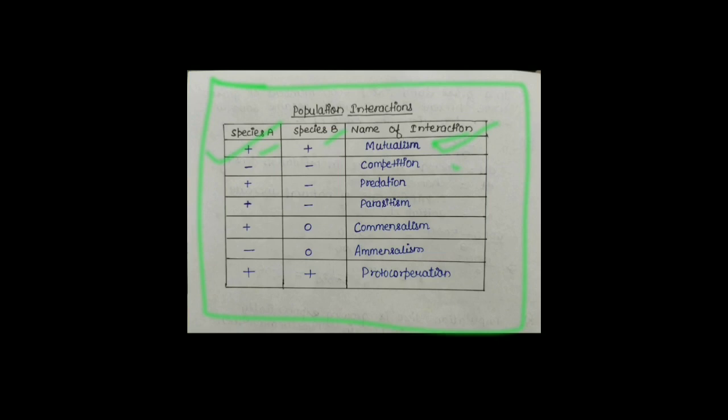दूसरा Interaction हमने देखा था Competition। Competition में Symbol Negative और Negative use किया है, which means Species A और Species B — दोनों Species जो Competition के through Interact हैं एक दूसरे से, दोनों ही Species को इस Interaction से नुकसान होगा।